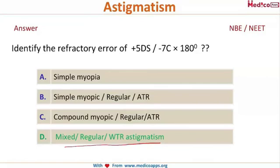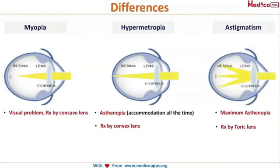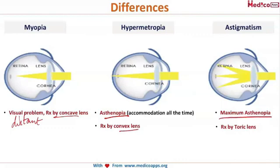Quick recap: In myopia, the patient cannot see at long distance — correct with a concave lens. In hypermetropia, vision is functional but the patient has severe asthenopia — correct with a convex lens. Maximum asthenopia is seen in astigmatism — correct it with a cylindrical or toric lens.